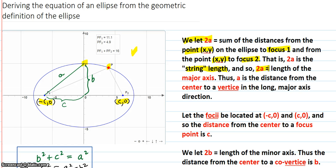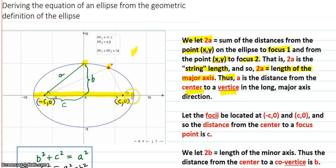So 2a, as shown in the other videos, is the length of the major axis — all the way across from one end to the other. The major axis is the long axis, and 2a is that length. Therefore, a is the distance from the center to a vertex. If it's 2a all the way across, then it's just a from the center to a vertex.